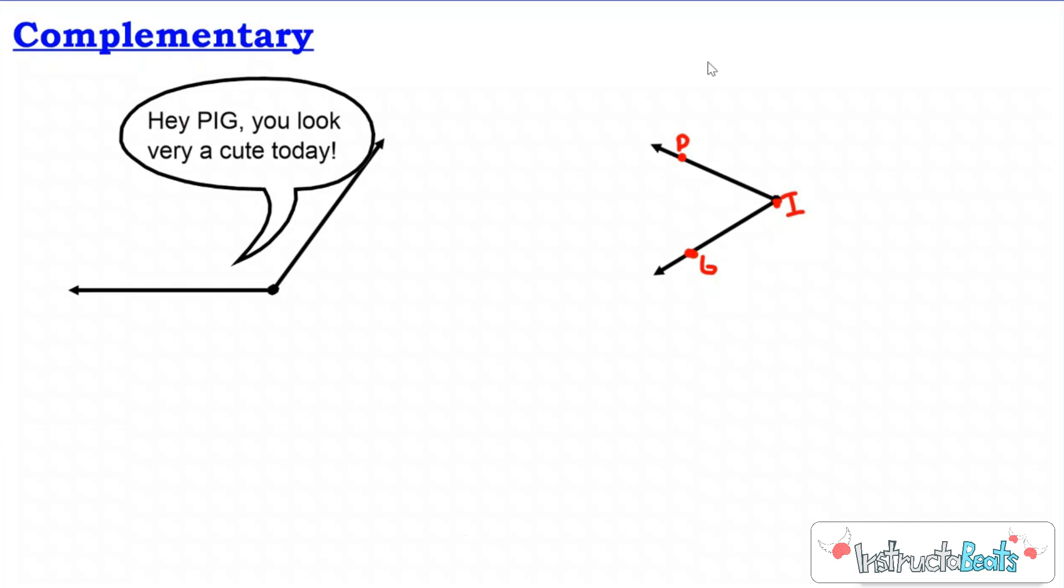So first, let's go ahead and look at complementary angles. So not a complement like, hey, pig, you look very acute today, right? I shouldn't have to, but I'm going to. This is angle P-I-G. Angle pig. And it is an acute angle. And it looked very acute today. We're pretty funny here at Instructor Beats. But no, that's not what we're talking about because that would be complement with an I right here instead of an E.